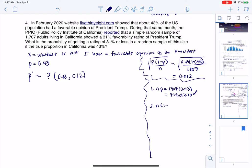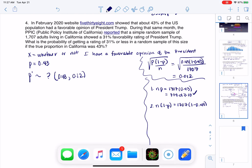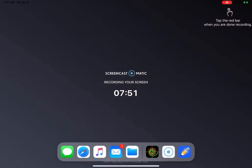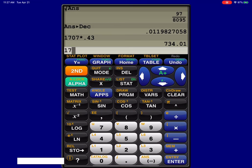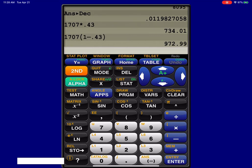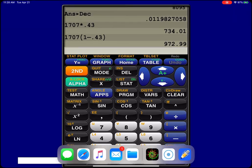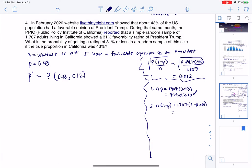The next thing I need to check is that N times 1 minus P is also greater than or equal to 10. So we have 1707 times 1 minus 0.43. It looks like 972.99. That is also greater than or equal to 10. Just before we move on, I want to point out these two numbers: if you were to add up 734 and 972.99, they would total out to your sample size of 1707. And they should.